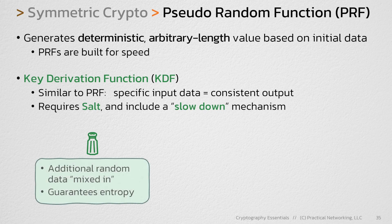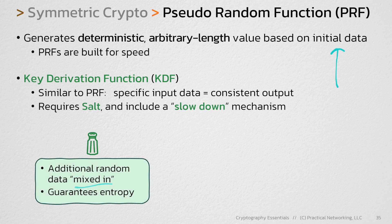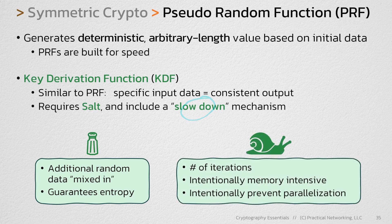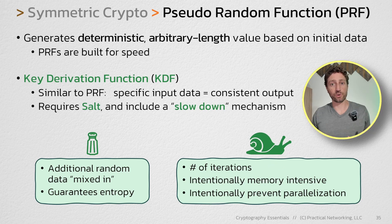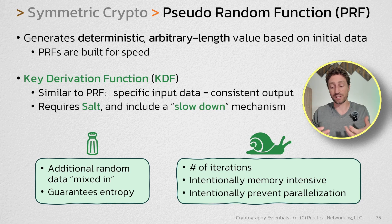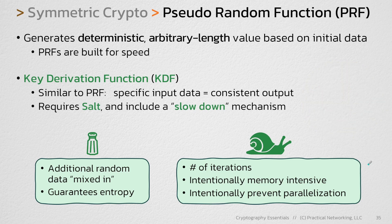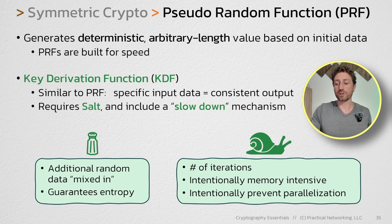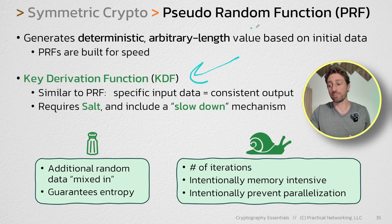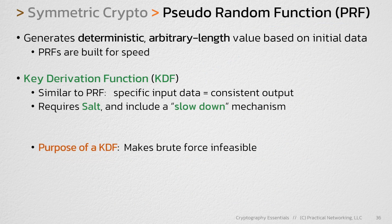In this context, salt is simply additional random data that is mixed into the initial data. The purpose of this is to guarantee some sort of minimum level of entropy. The slowdown mechanism can be any one of a number of strategies. One strategy could be running the KDF for a certain number of iterations — meaning instead of going straight from input to output, you recalculate the output a thousand times through the same KDF. Another potential slowdown mechanism is to use math that is intentionally very memory intensive, or calculations that prevent the ability to be calculated in parallel. The purpose of a KDF is to make brute-forcing the output infeasible.